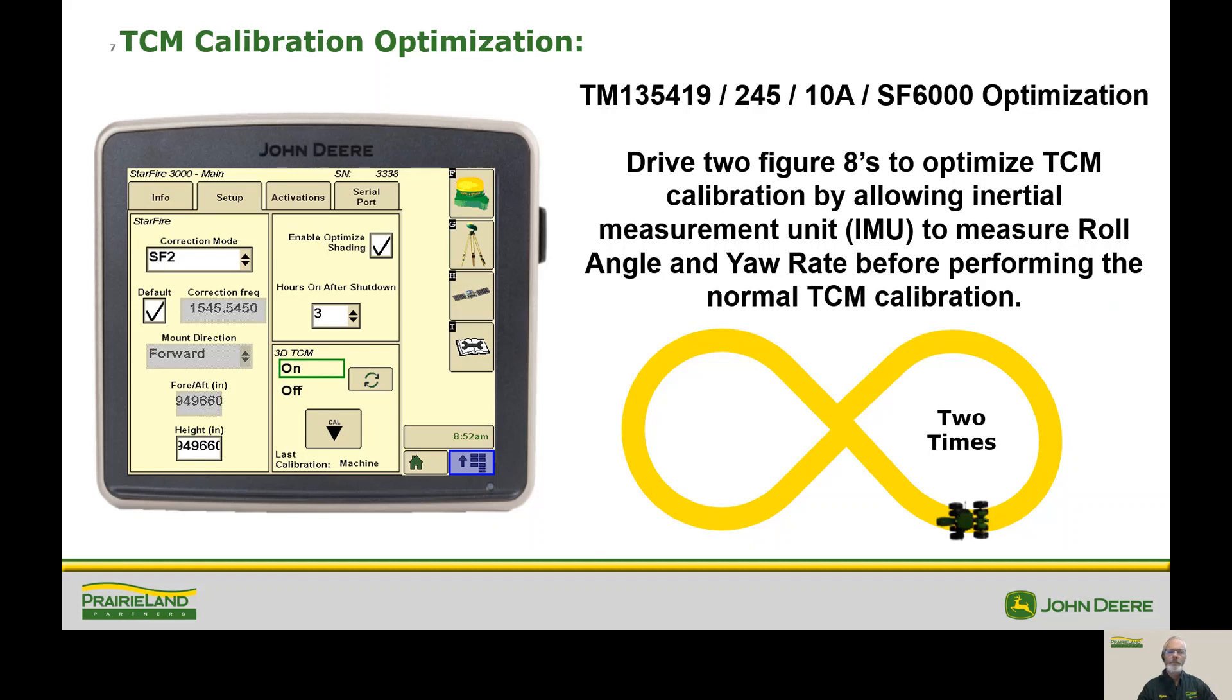One thing about the new 6000 receiver is they were recommending that we do a figure eight two times before we do the regular calibration. There's been some reports of improvement, even on the 3000, but mostly I wanted to point this out to improve your TCM calibration. Turn a figure eight several times before you do the regular calibration. You want to calibrate this thing anytime the receiver has been unplugged or at the beginning of the season. Why not give it a go before this season starts?